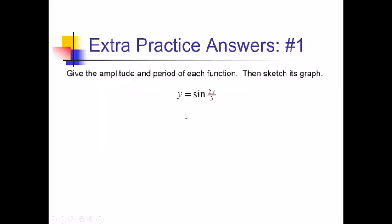To graph this function, let's first begin by finding the amplitude and period. The amplitude is going to be the coefficient of the trig function, so there's an invisible one out here — that's our amplitude A. For the period, I have to do 2π divided by this B value, that's the coefficient of the variable inside the trig function. So I need to do 2π divided by 2/3. Doing a little same-change-flip, this is really 2π times 3 over 2. The 2's cancel, so that's 3π altogether.